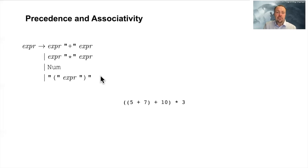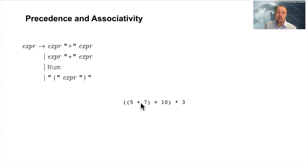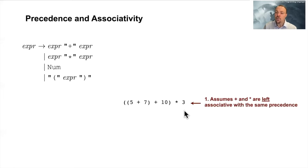Let's look at an example. If we are going to parse 5 plus 7 plus 10 multiplied by 3, you can interpret this in different ways. Here we see that we evaluate first 5 plus 7, then take the result of this and add 10, and then multiply everything by 3. This interpretation assumes what is called left-associative operators — both plus and multiplication are left-associative — and that they have the same precedence.